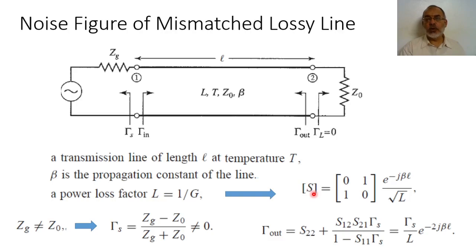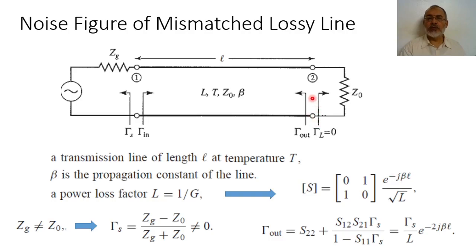Since the scattering parameters represent voltage ratios, it would be square root of power, so 1 over √L. Similarly the power transmitted from port 2 to port 1 gives |S21| = 1/√L. The phase shift from port 1 to port 2 is e^(−jβL), and similarly the phase from port 2 to port 1 is e^(−jβL).